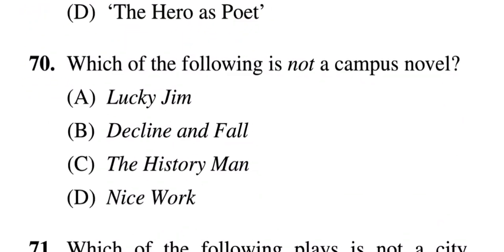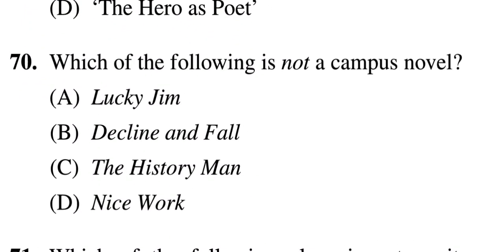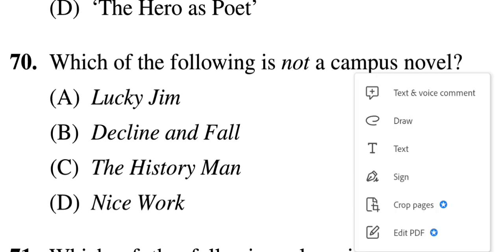Next question: Which of the following is not a campus novel? Options are A: Lucky Jim, B: Decline and Fall, C: The History Man, D: Nice Work. I have heard about the campus novel for the first time, so please do your own research. The correct answer is B — Decline and Fall.